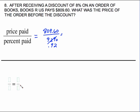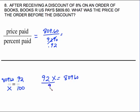Another way to approach this is from a proportion standpoint. We know the 100% full price is unknown — that's X. We do know we paid 92%, and that price was $809.60. Cross-multiplying gives 92X equals 100 times $809.60. Divide both sides by 92, and that's the same problem — it just has the decimal points moved out. So you really have three ways to attack this: straight equation, price paid over percent paid, or the proportion method.